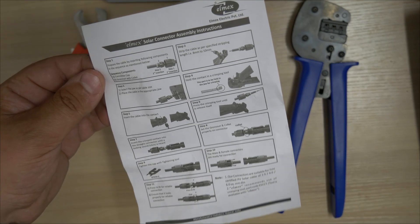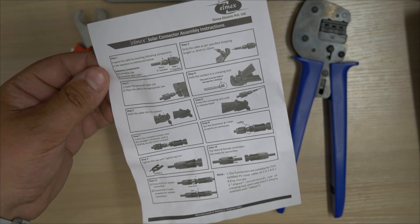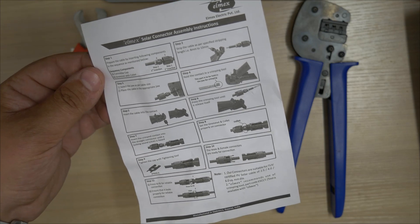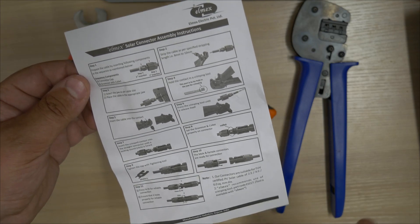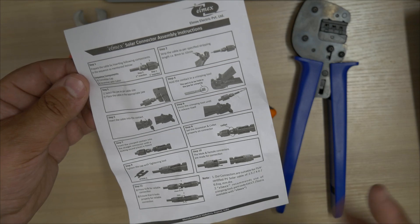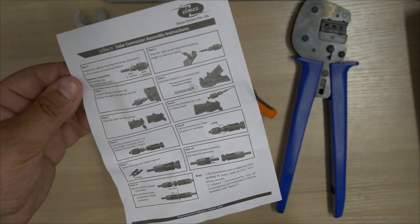It does say that the connectors are suitable for TUV certified PV solar cable, 2.5, 4 and 6mm size. So these crimps will go on the ends of those various size conductors, which is good to know.